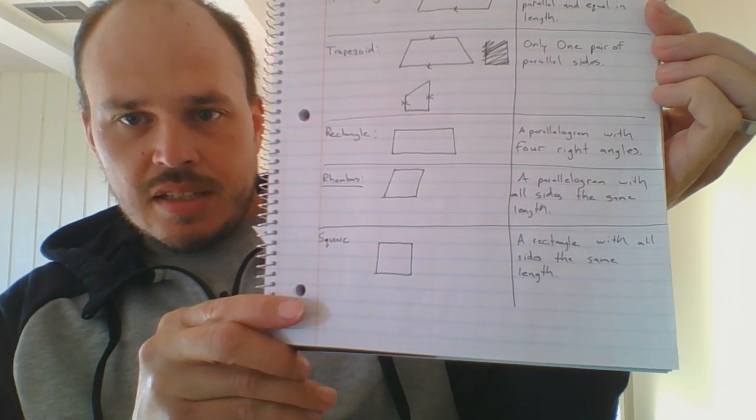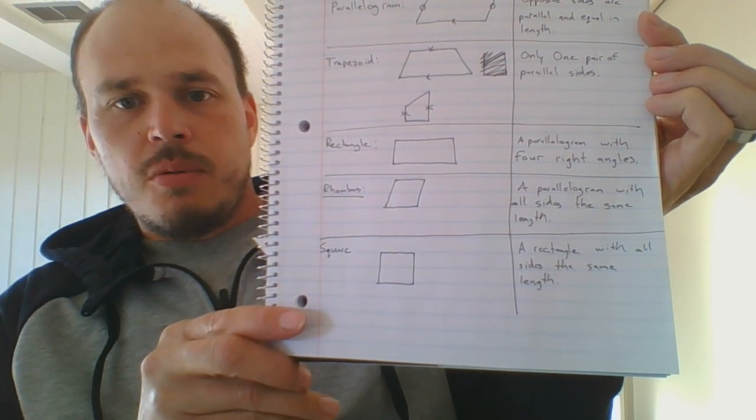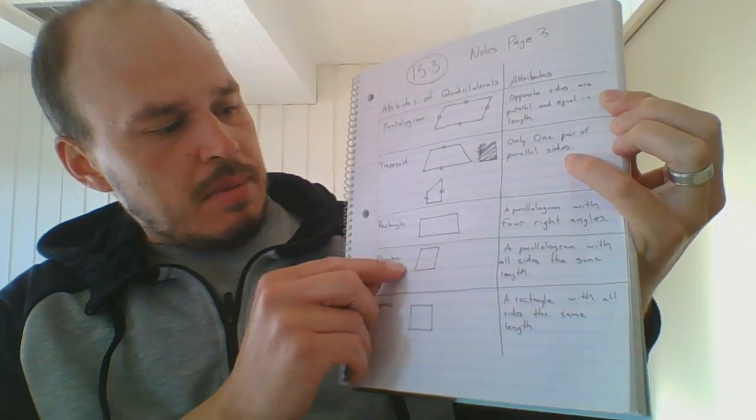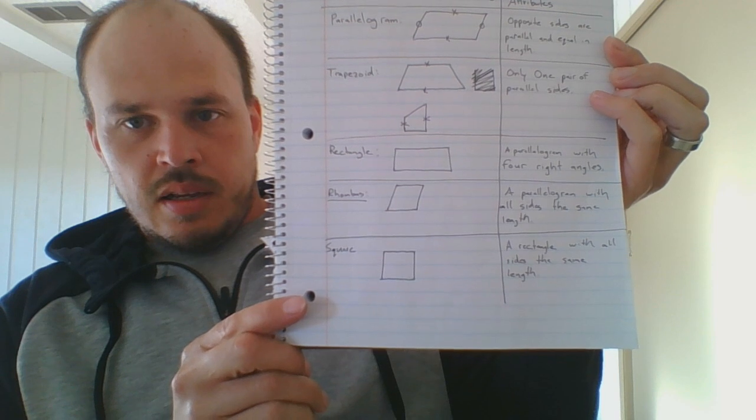Then below, we have a rectangle. A rectangle is a parallelogram with four right angles. If you remember from yesterday, a right angle can be marked by a little sign right here. It's 90 degrees. That has four of them.